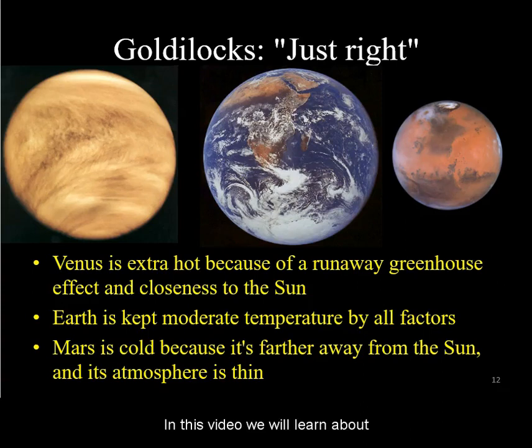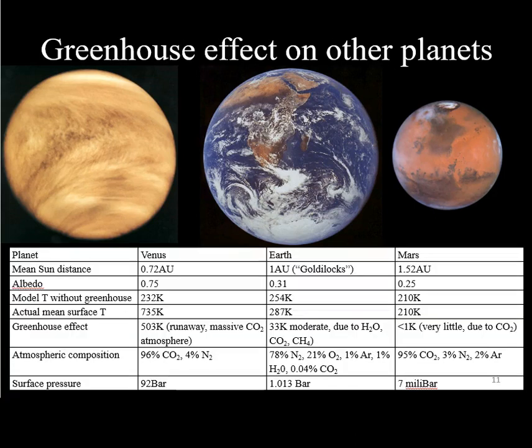In this video, you will learn about the first factor affecting surface temperatures on terrestrial planets. This first factor is distance from the Sun, which translates to total amount of sunlight received, also called insolation.